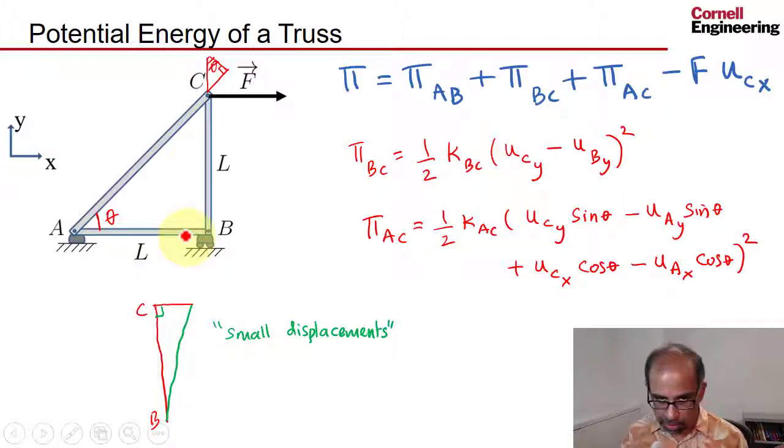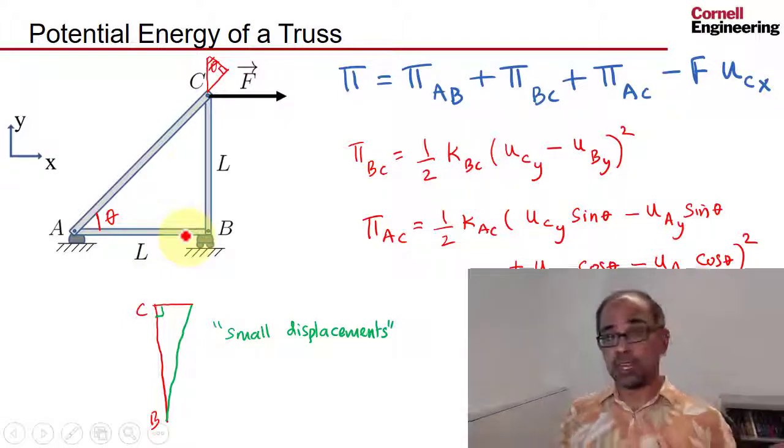Similarly you can do it for AB. This sets the stage for minimization of the potential energy and derivation of the algebraic equations, which is the key thing in the finite element method—derivation of the algebraic equations relating neighboring nodal displacements. We'll take a look at that next.